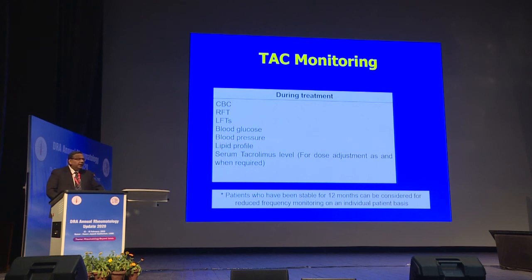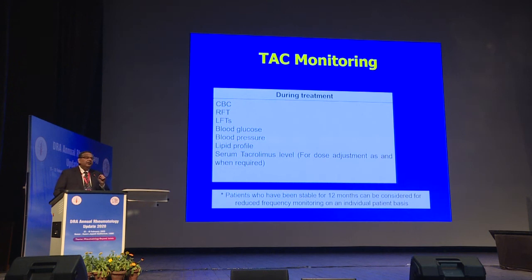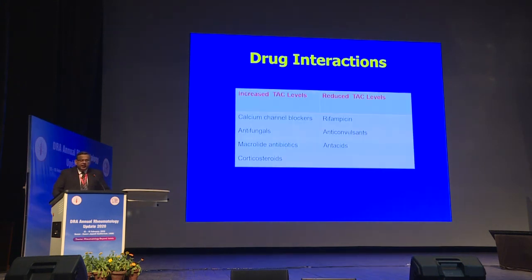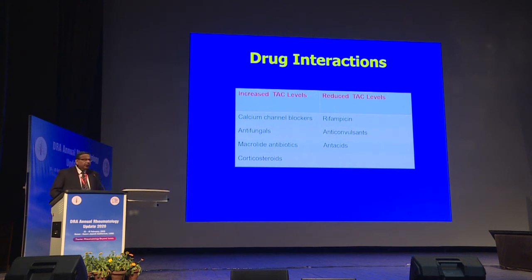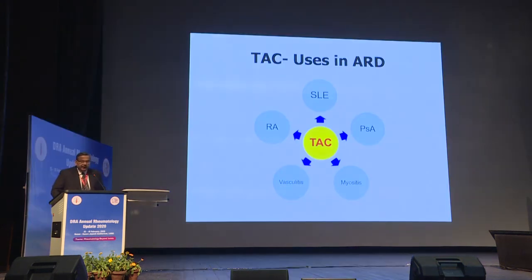Monitoring requires blood counts, renal and liver function tests, blood glucose, blood pressure, and serum tacrolimus trough levels. Maintaining trough levels between 4 and 6 ng/mL with smaller dosages makes tacrolimus a valuable adjunct for lupus nephritis and ILD. Enzyme inducers like rifampicin and anticonvulsants lower tacrolimus levels, while certain antifungals can increase them — important drug interactions to be aware of.